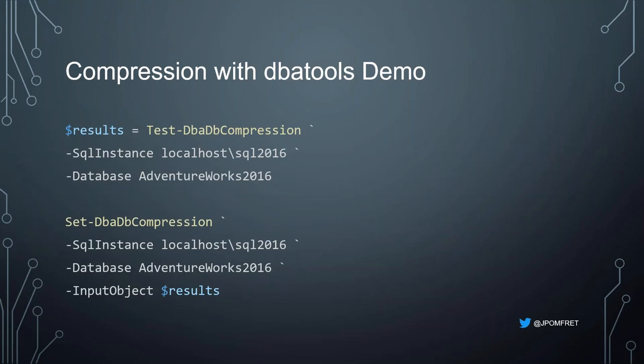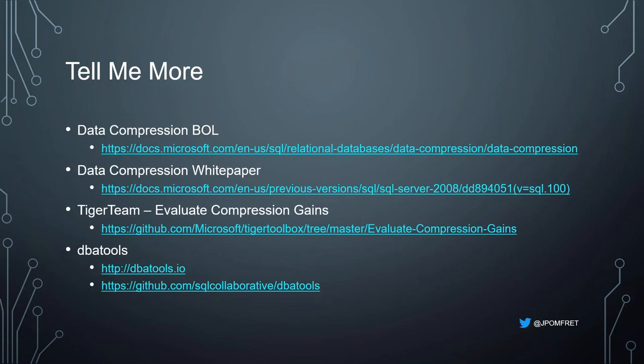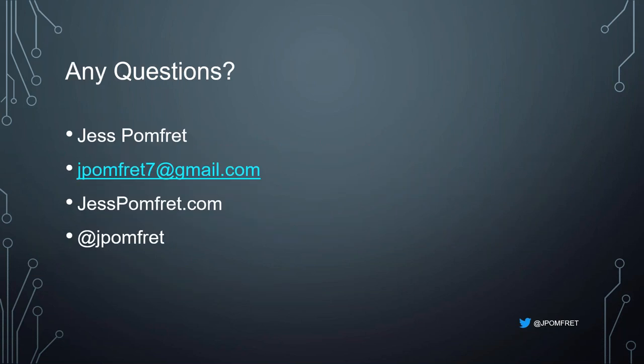The code for Test and Set-DbaDbCompression is in the slides. All demos will be uploaded to GitHub. For further learning about data compression: Books Online has great resources; there's a data compression white paper from 2008 that's still relevant; the Tiger Team has an evaluate compression gain script and other great tools in their Tiger Toolbox on GitHub; and DBA Tools has both a website and GitHub repo. Feel free to email or find me on Twitter or Slack with any questions.